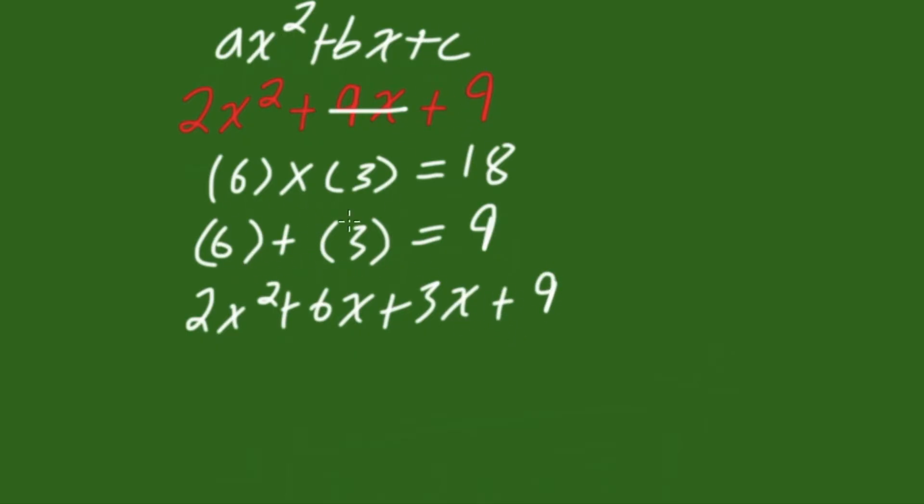So here, we have just taken these two numbers we have found and replaced it in the middle of our quadratic. Now, for this next step, we want to factorize this in two parts. We want to factorize this first section, and then we want to factorize this second section. So we're factorizing these sections individually.